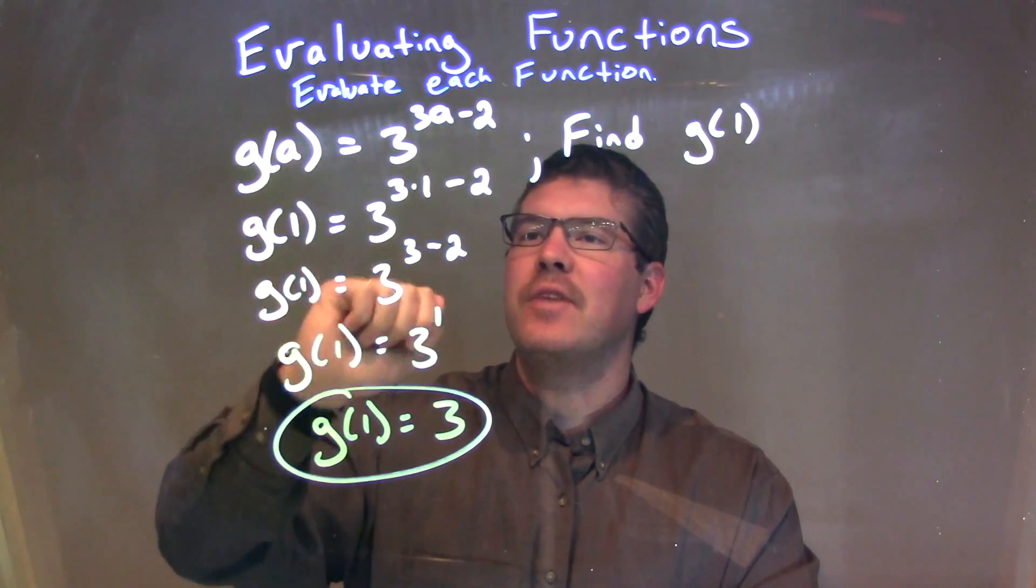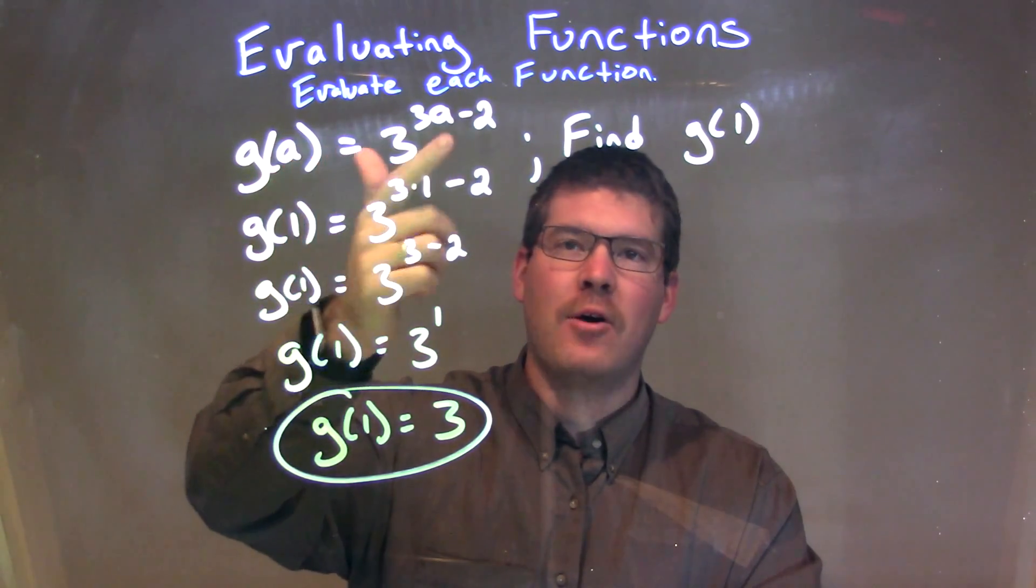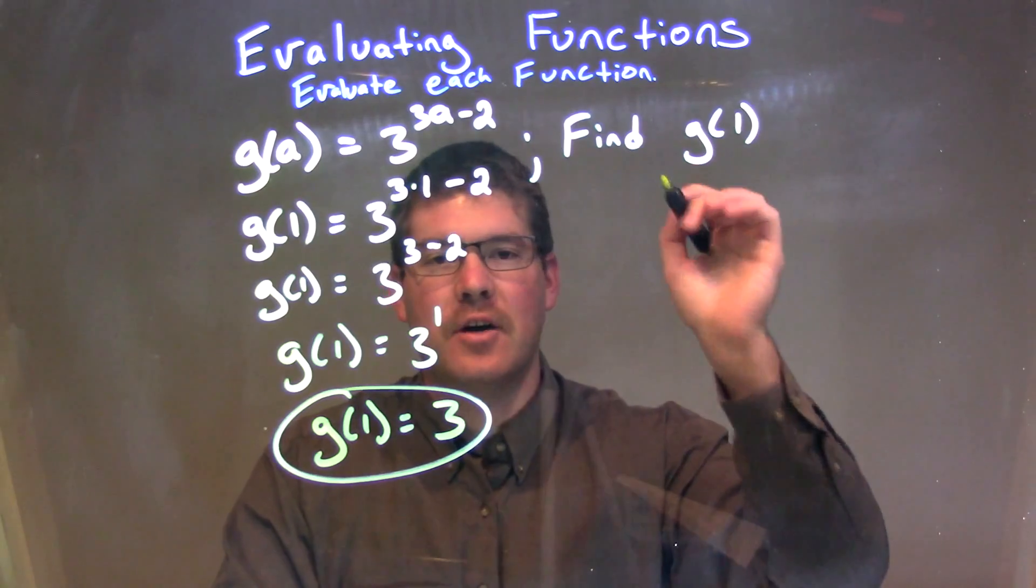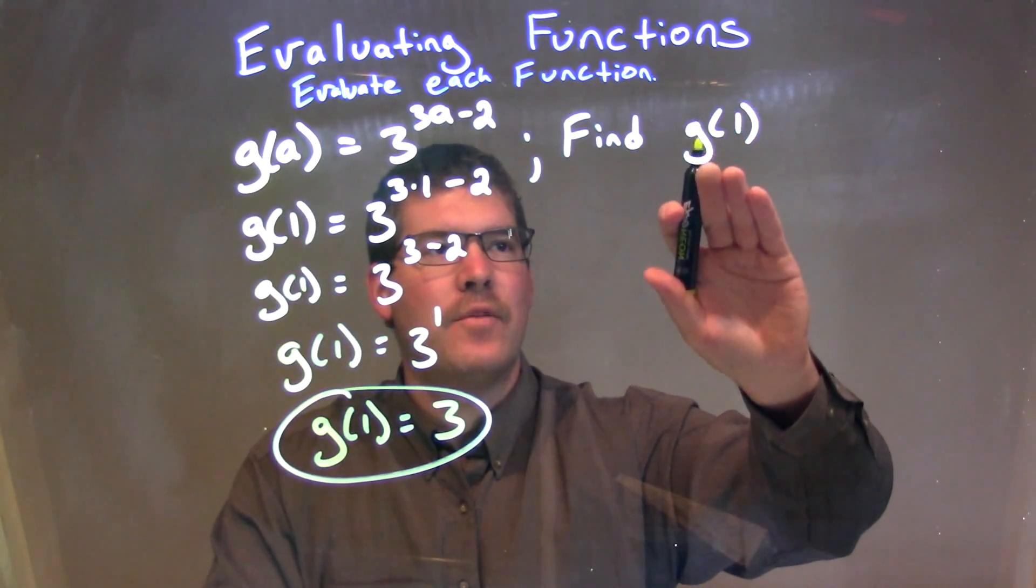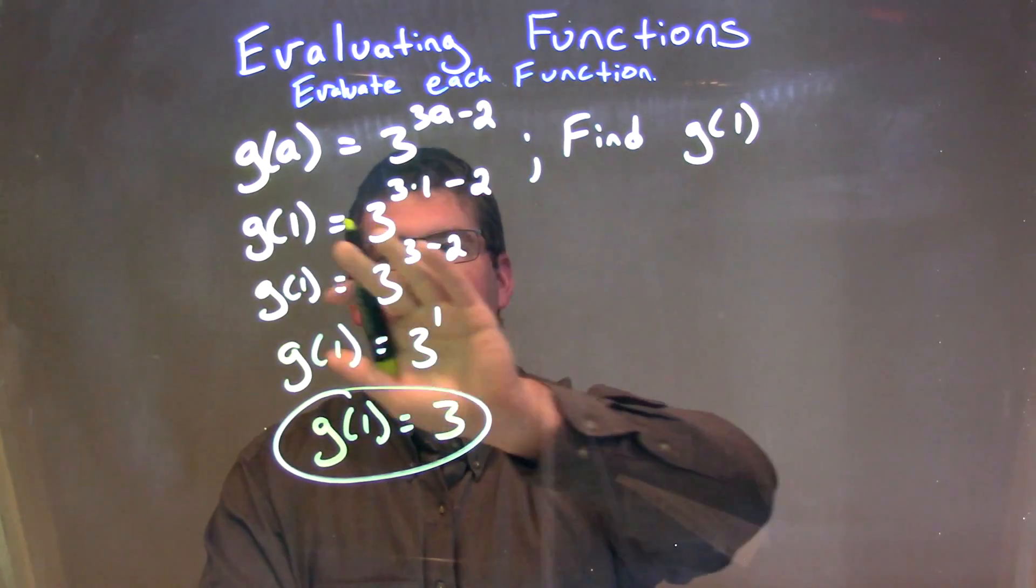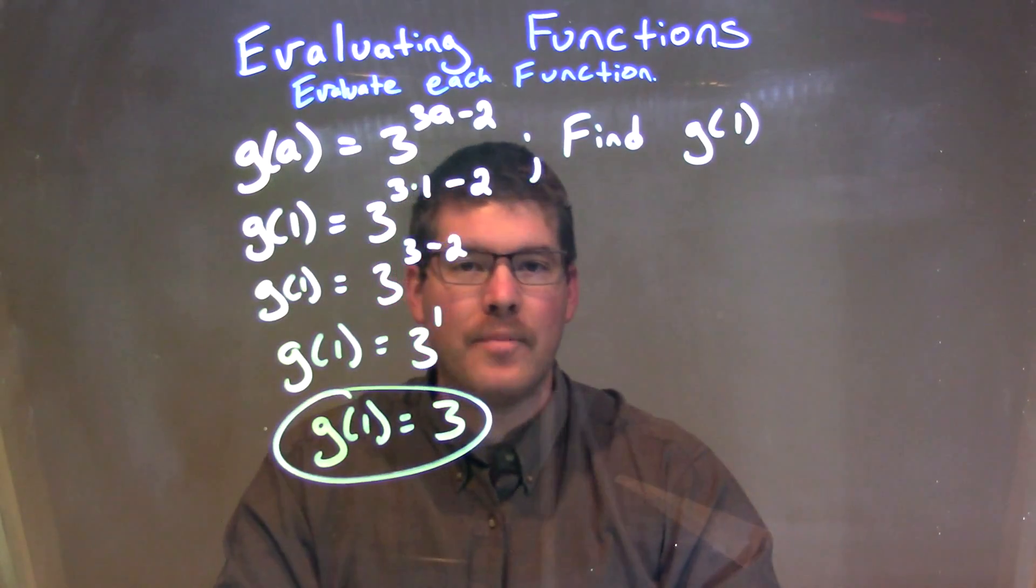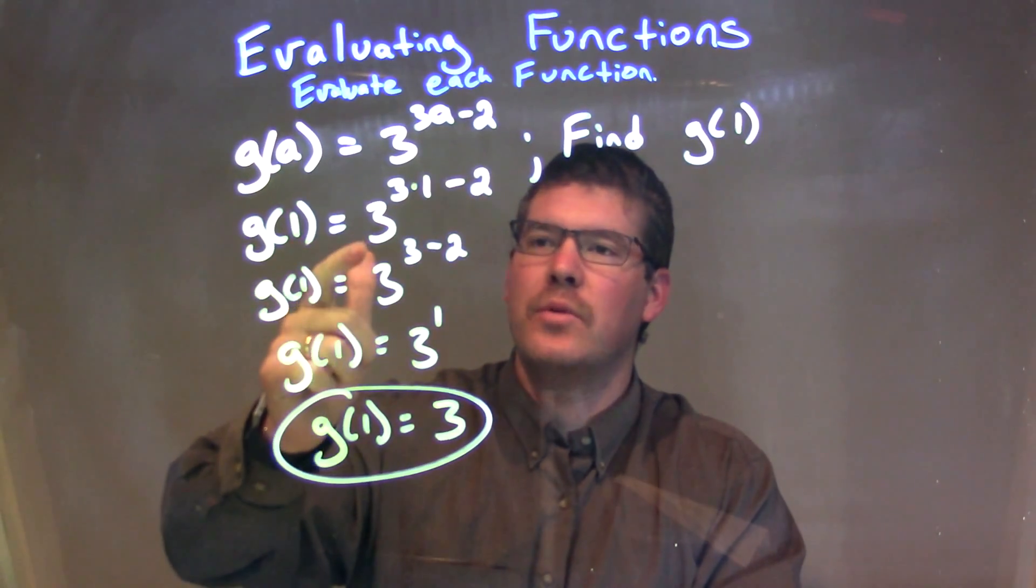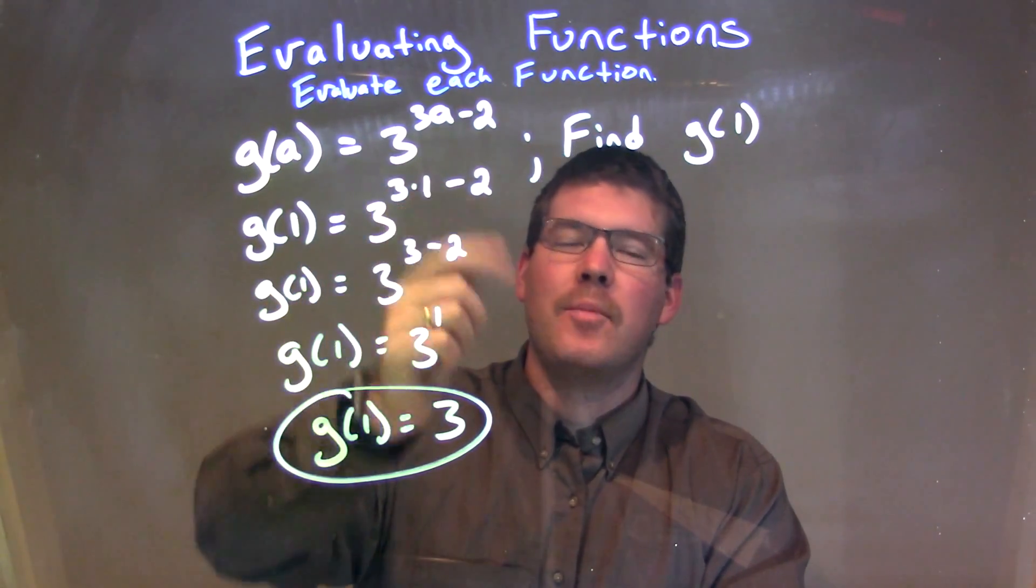So let's recap. We're given g of a is equal to 3 to the 3a power minus 2, and we had to find g of 1. What I did here, when I'm finding g of 1, every single time I have an a, I'm plugging in a 1. So g of 1 is equal to 3 to the 3rd power times 1 minus 2.